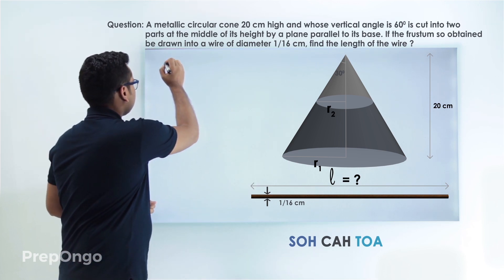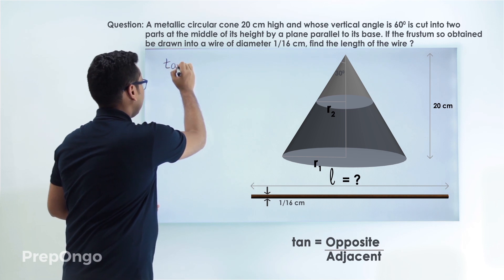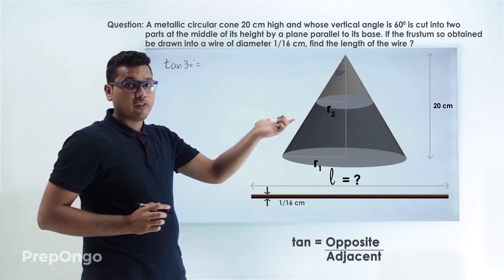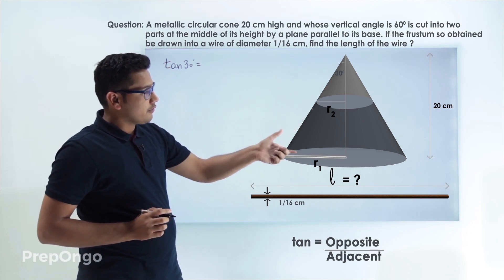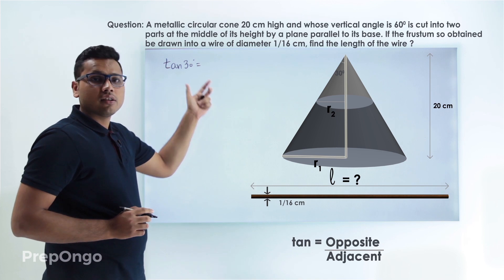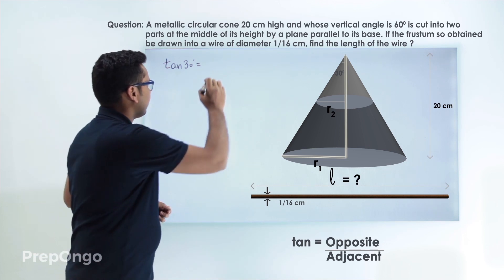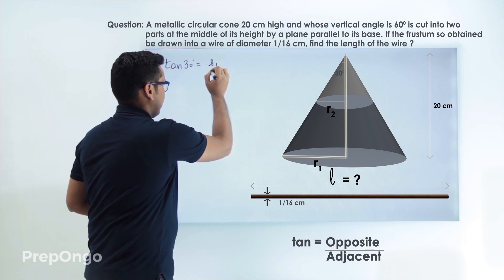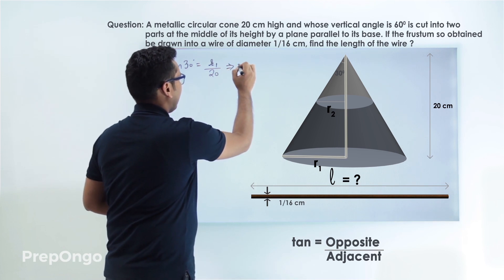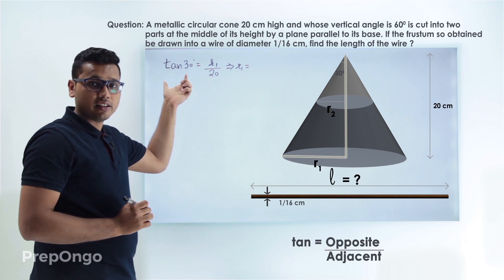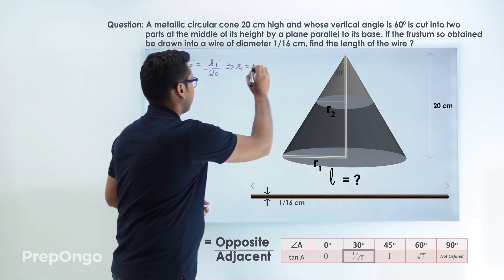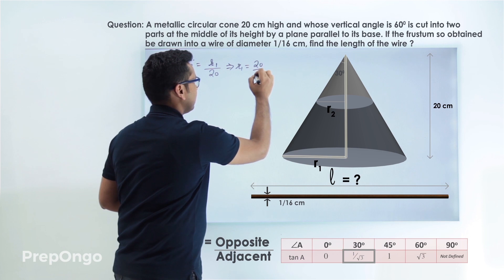So we'll apply TOA here. Tan of 30 degrees will be equals to, we have to find the value of opposite here and we are given the value of adjacent. So tan is opposite upon adjacent and opposite we have to find out which is R1 over 20. So just put the value. R1 will be equals to 20 tan 30 and the value of tan 30 we can calculate from the table. It is 1 by root 3. So this will be 20 by root 3.